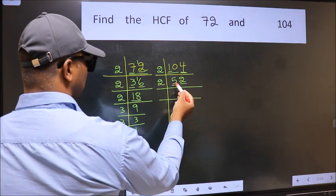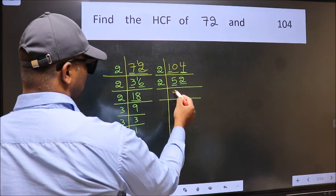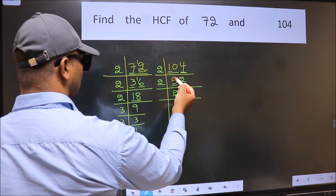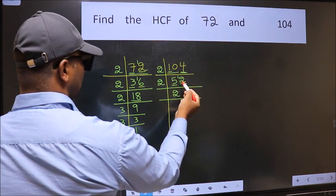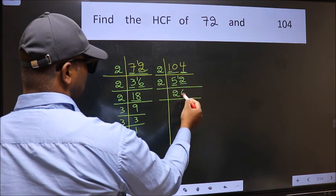Now last digit 2 even, so take 2. First number 5. A number close to 5 in 2 table is 2 times 2 equals 4. 5 minus 4 is 1, carried forward 12. When do we get 12 in 2 table? 2 times 6 equals 12.